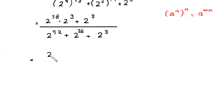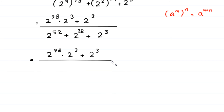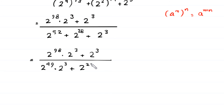Next, 2 to the power 98 can be written as 2 to the power 9 times 2 to the power 9 times 2 cubed. In the denominator, 2 to the power 52 plus 2 to the power 28 plus 2 cubed can be expressed as 2 to the power 25 times 2 cubed plus 2 cubed.